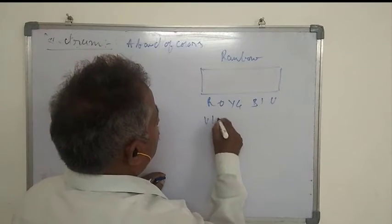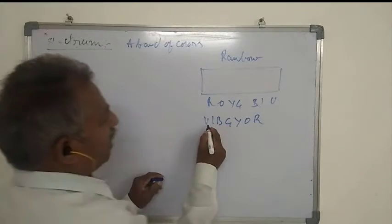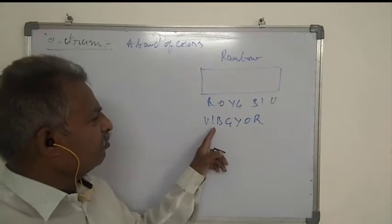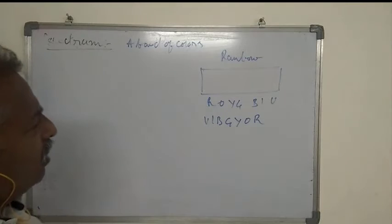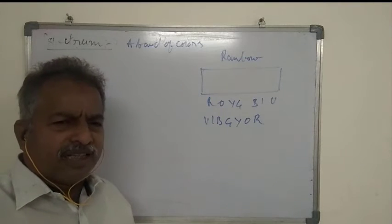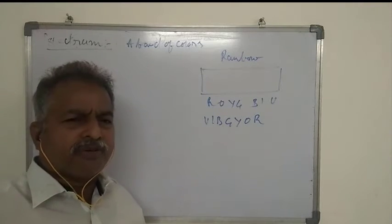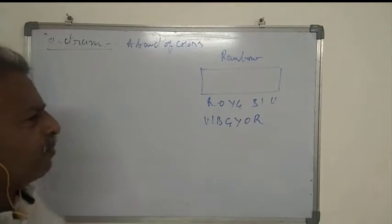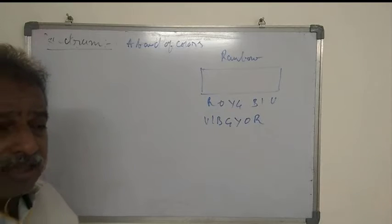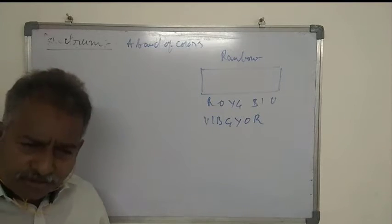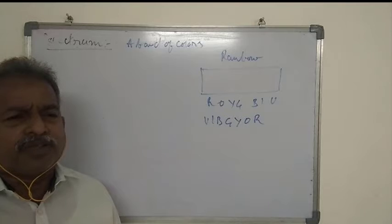In a rainbow, the seven colors are merged with each other — VIBGYOR. Violet mixes with indigo, indigo mixes with blue, blue mixes with green, etc. The colors merge with one another as we observe in rainbow. That is continuous spectrum. So as electron releases or radiates energy continuously, a continuous spectrum like rainbow should be obtained.